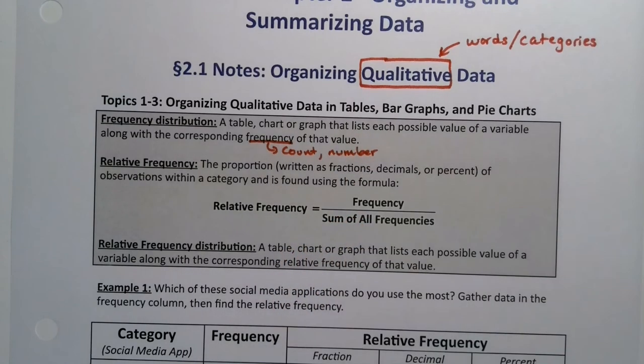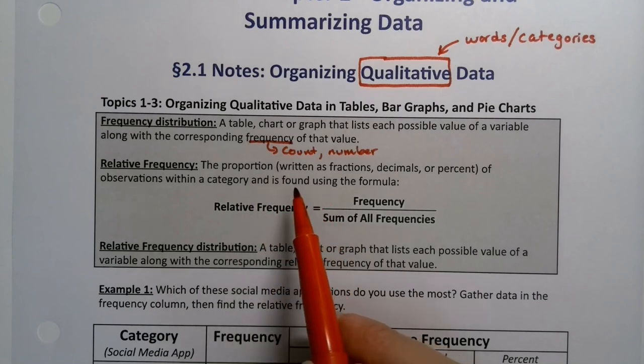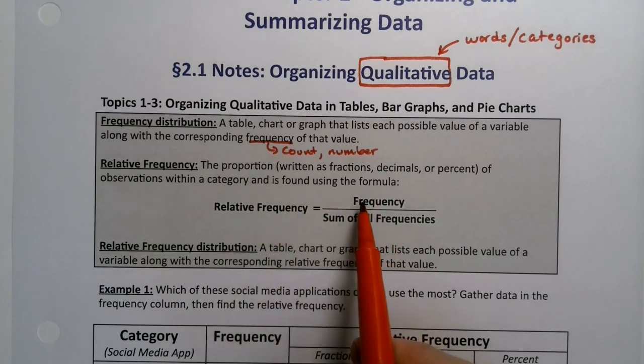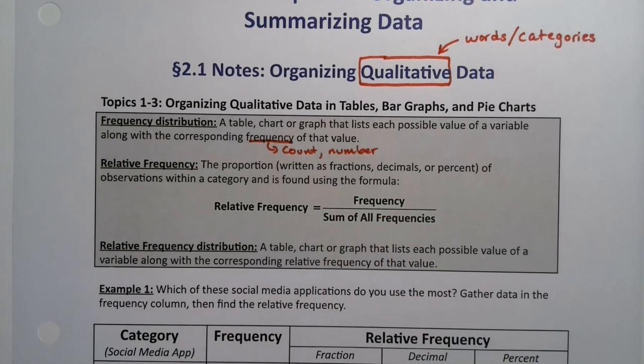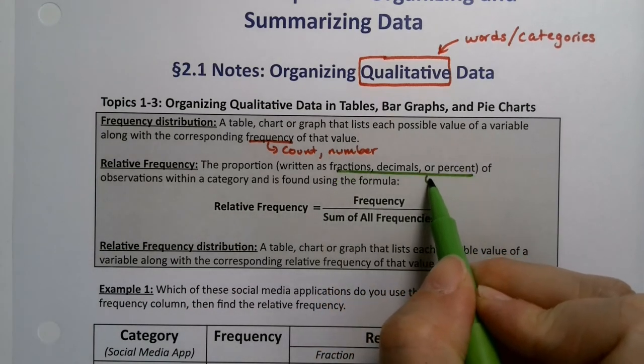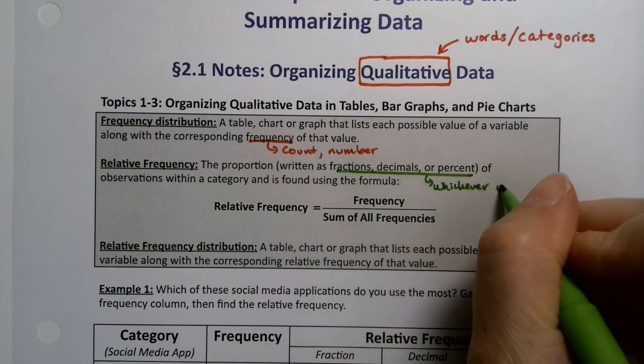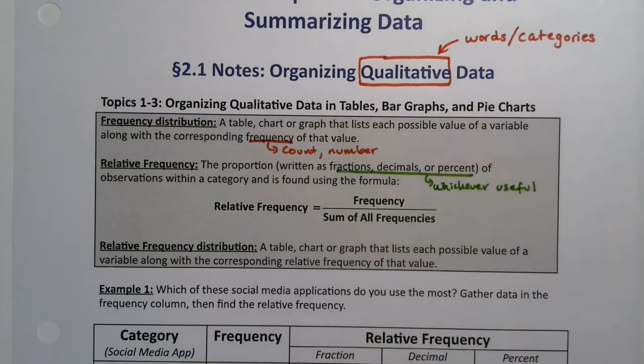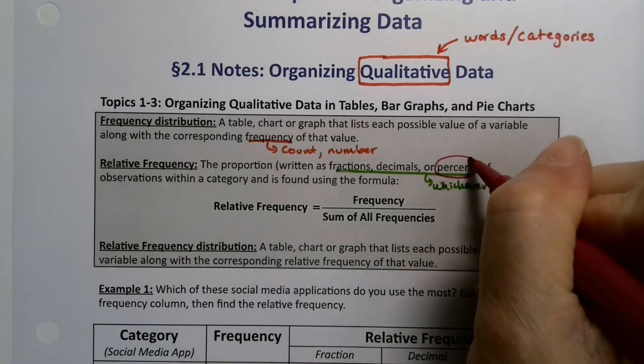A relative frequency is the proportion of observations within a category and it's found using the formula: frequency for that category divided by the sum of all the frequencies. Now you can write these as a fraction, decimal, or percent, whichever is useful for you, and there are different times when each of them are useful in the course. Percents tend to be the most useful for when you're interpreting.